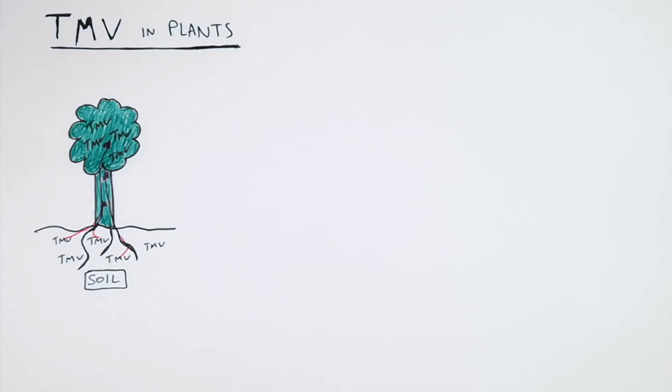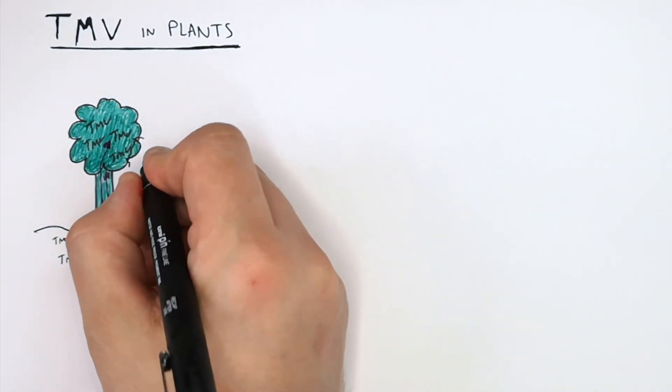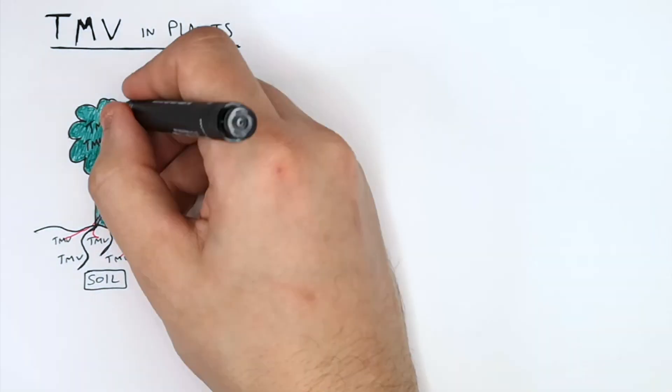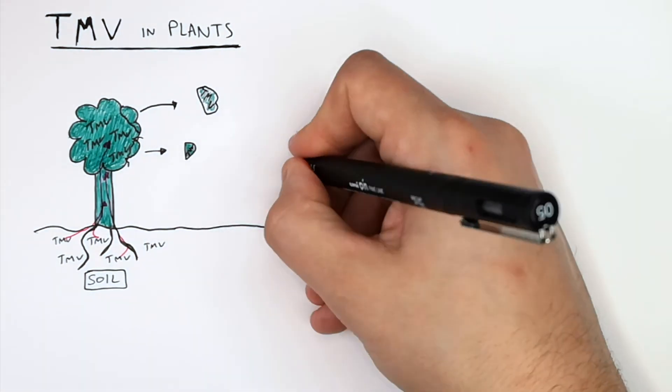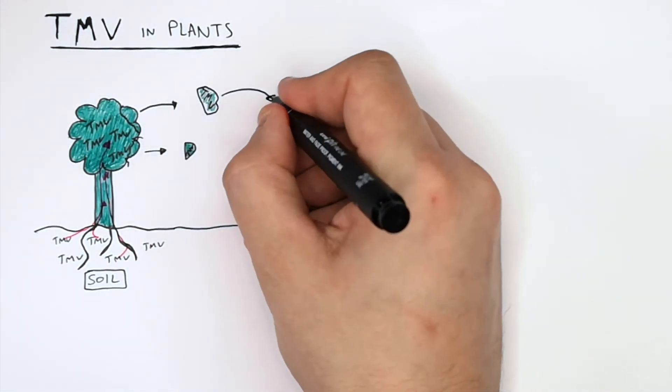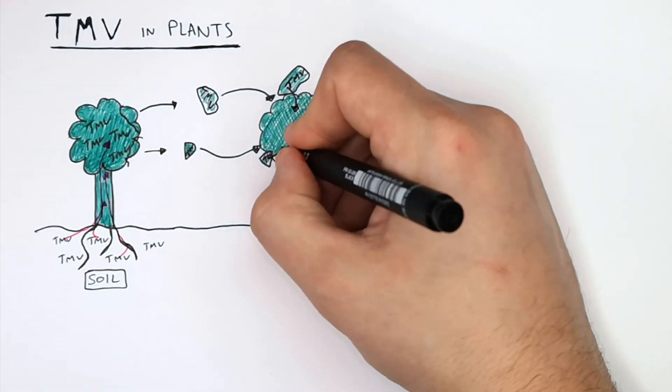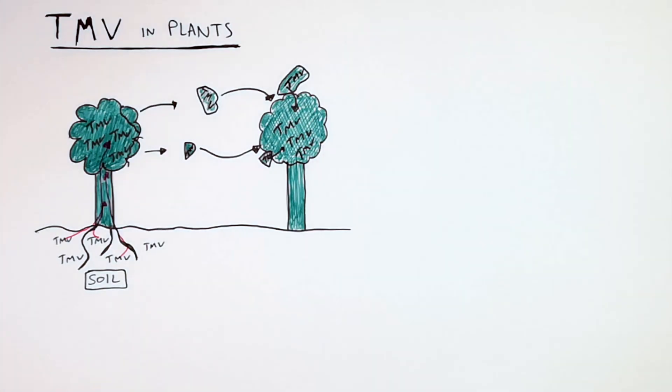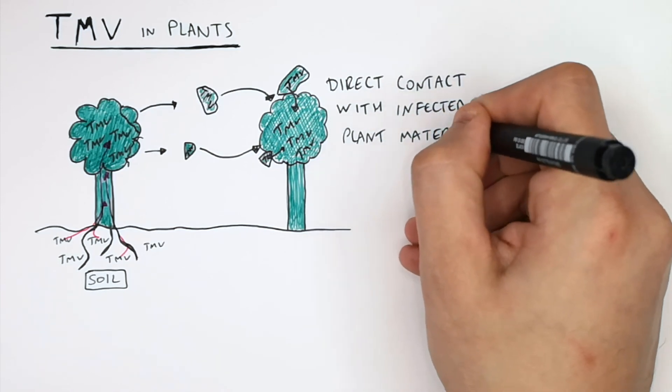So how is TMV transmitted from one plant to another? So if a part of the plant infected by TMV comes off the plant, and if that part of the plant then comes into direct contact with another plant, well then the TMV is going to be transmitted from one plant to another. TMV is transmitted by direct contact with infected plant material.